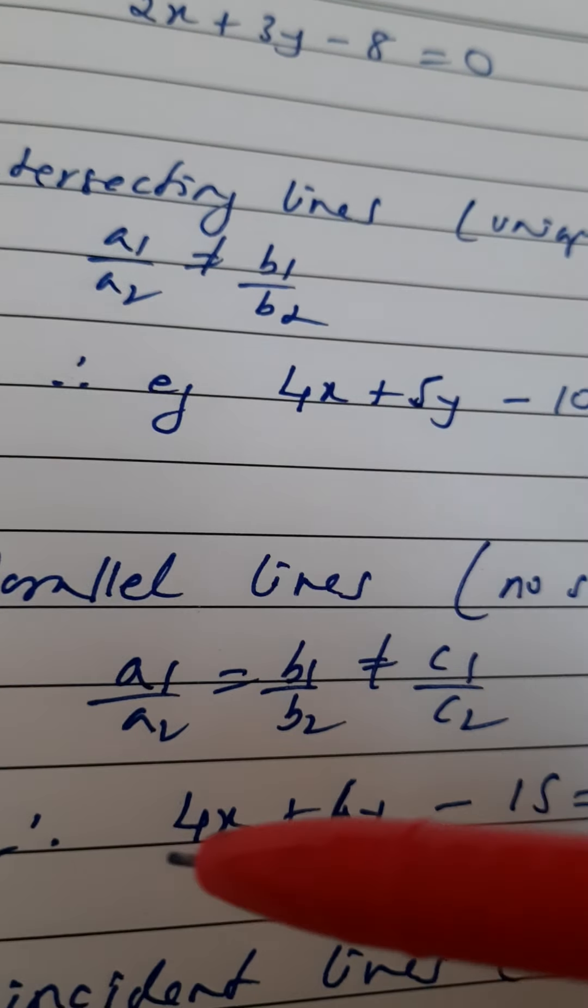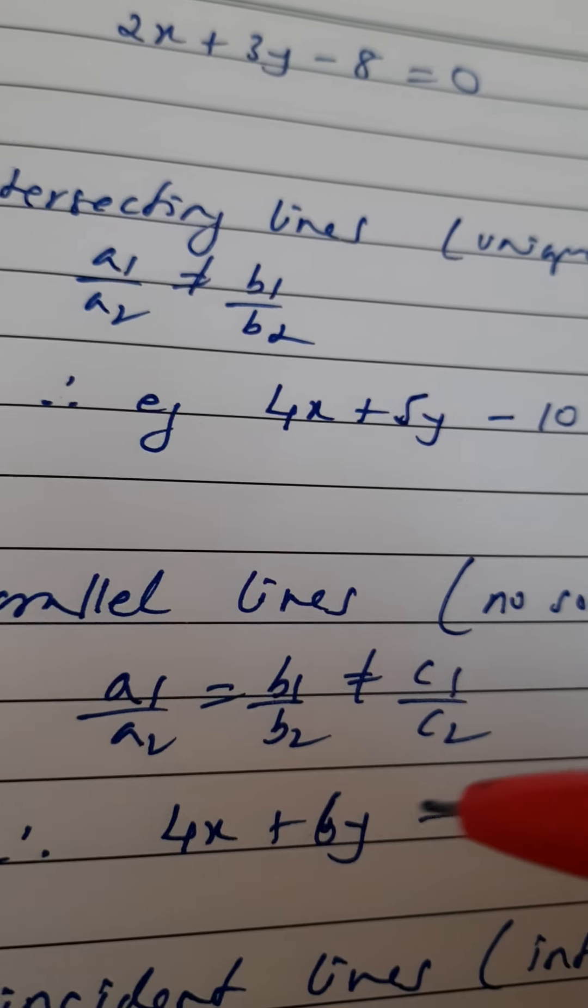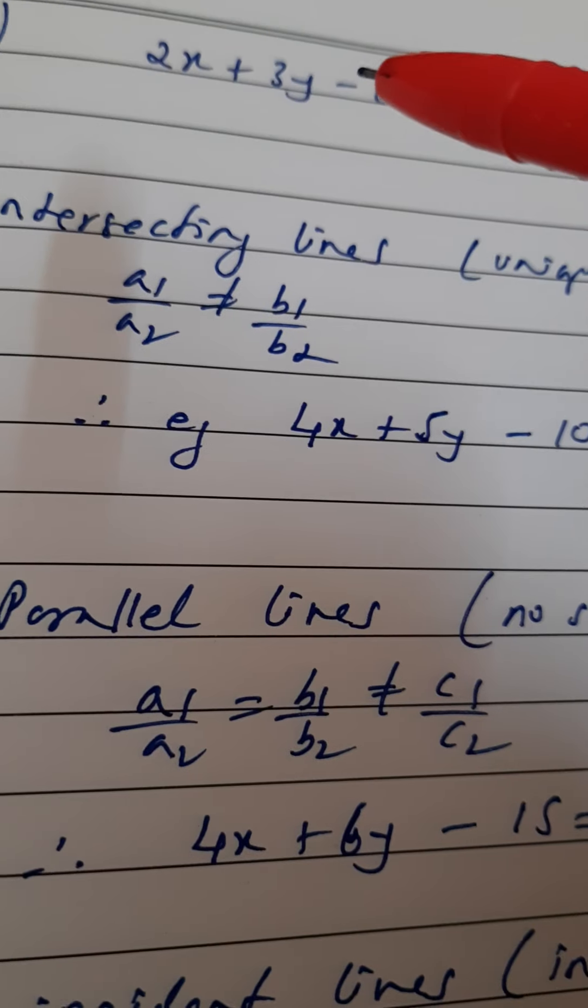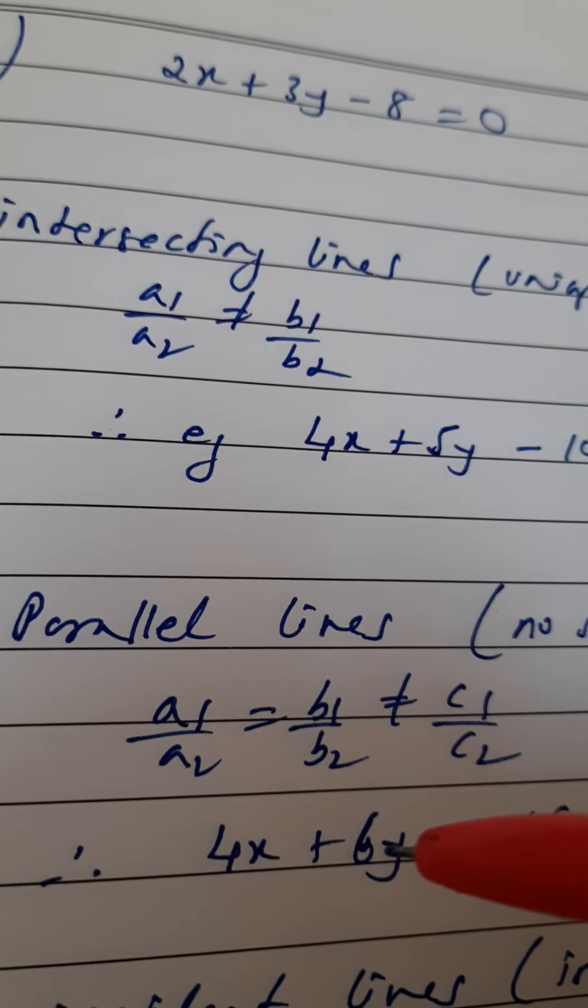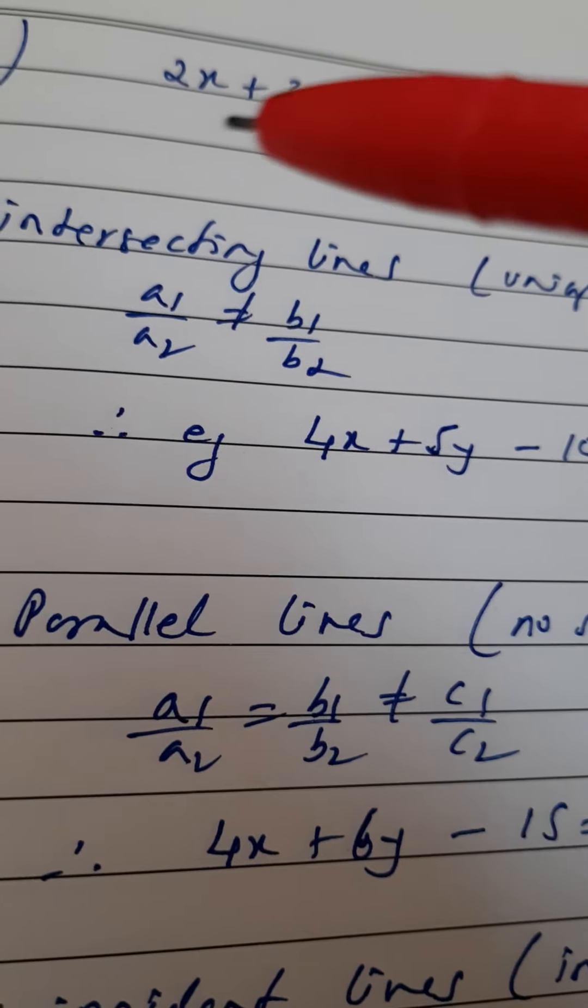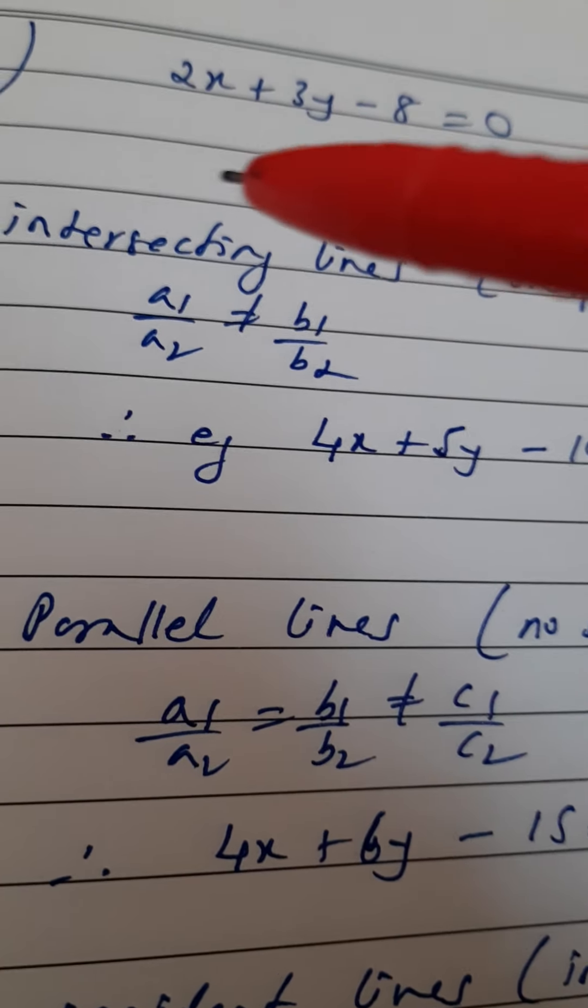So I am going to select a suitable equation. I have made this as 4x + 6y - 15 = 0 because a1/a2, 2 by 4, will become 1 by 2. B1/b2, that is 3 by 6, is also 1 by 2. You need to select the same—it could be any ratio, 1 by 3, 1 by 4, that's up to you.